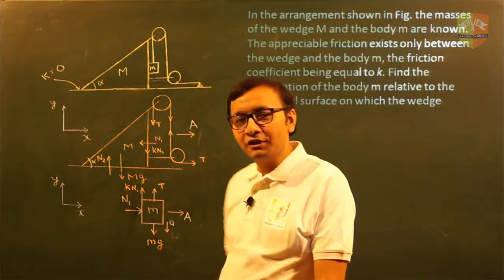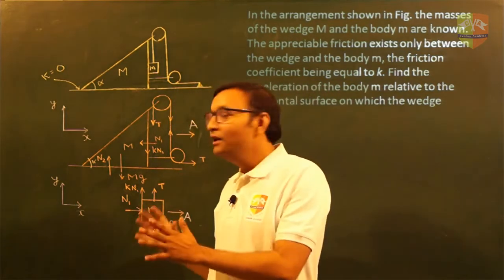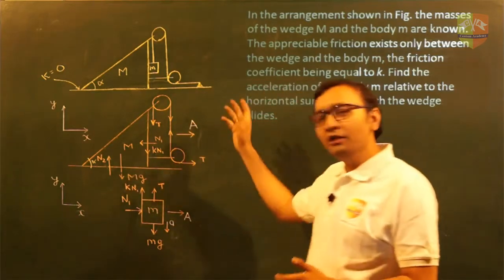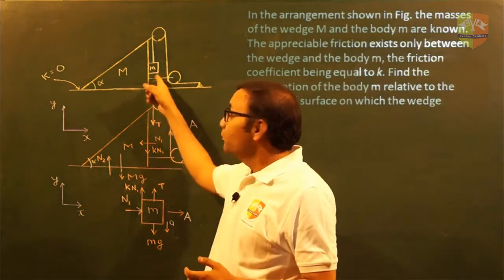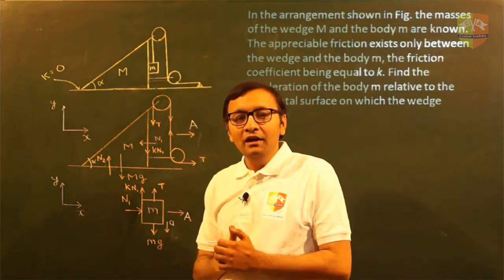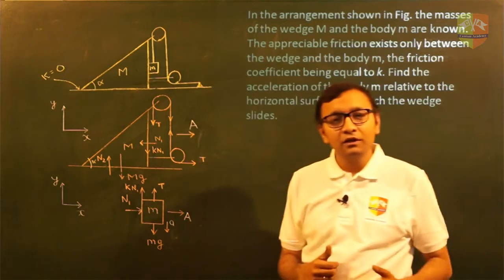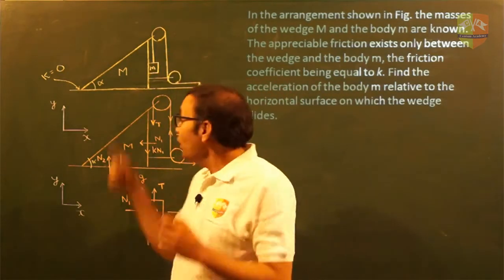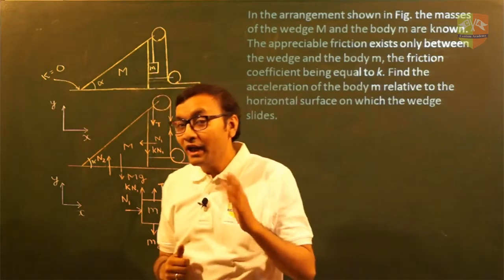We have taken a new question. In this question we will try to apply the basics and learn how we can solve it. The question goes like this: there is a wedge of capital mass M and there's a small mass m which is connected through a pulley, and their motions are constrained. This wedge will move when this small m comes down — when small m comes down, the wedge will get pulled forward.